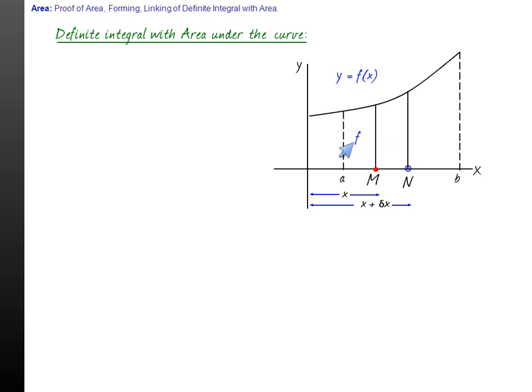The ordinates at M will have length f(x) and this will have length f of x plus delta x. Now suppose this area is part of the area which we want to calculate, the area of the curve from a to b. So this area, say delta A, very small area because M and N are neighboring points.